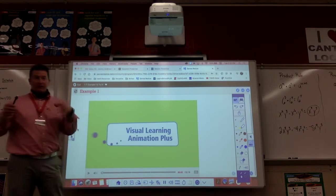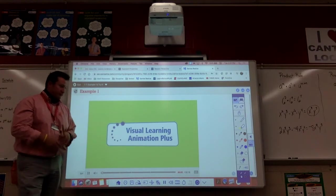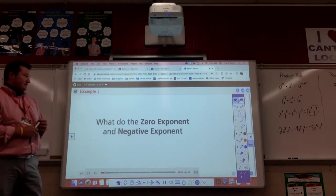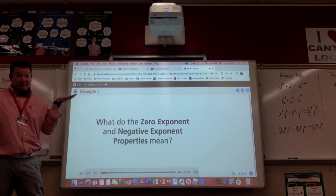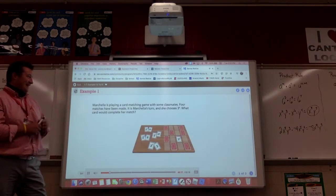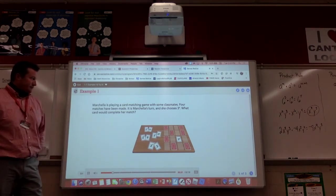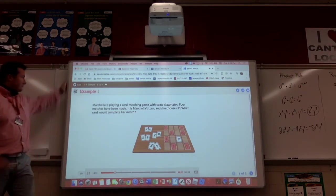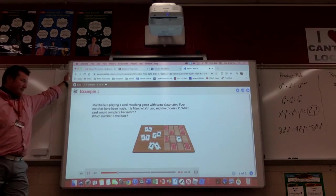So with that we're going to roll right into example 1. So you guys should be in your workbooks at example 1, we're going to go through it just like we usually do. Let's see what we've got. What do the zero exponent and negative exponent properties mean? Think about this question during the lesson. Markayla is playing a card matching game with some classmates. Four matches have been made. It is Markayla's turn and she chooses 3 to the power of zero.